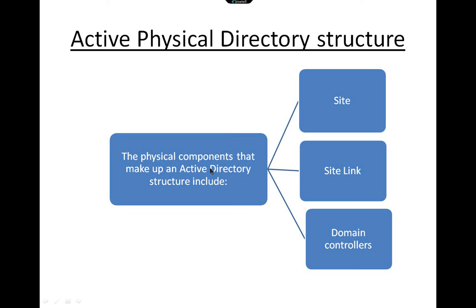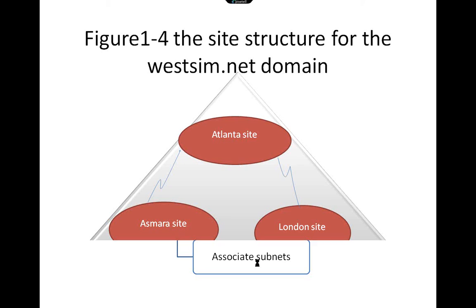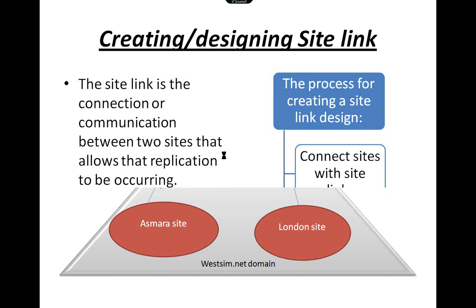The physical structure of active directory consists of the physical components that make it up. The active directory physical structure includes sites, site links, and domain controllers. Sites require creating a site design, which includes deciding which locations will become sites, creating a site object design, creating a subnet object design, and associating the subnets. This diagram shows the site structure, for example for a Western network domain.